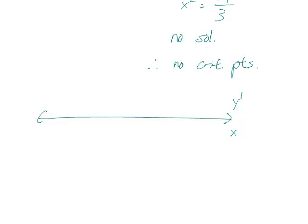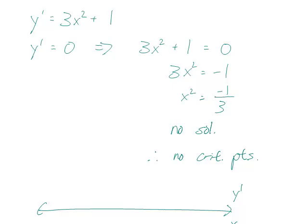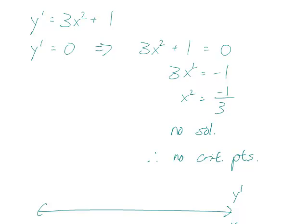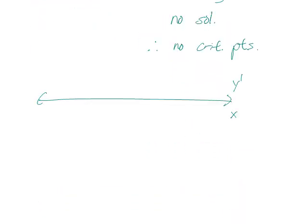We can just plug any real number in, for example 0, and we get positive 1. So the function is always increasing — it's always going up.